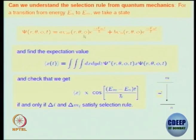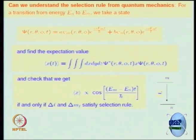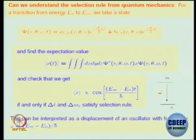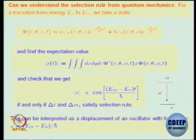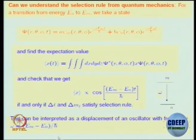Formally, even in a one-dimensional problem the expectation value is proportional to cos ωt. But for the three-dimensional hydrogen atom problem, the radial coordinate expectation value in a superposed state has a time dependence and will be non-zero only if ΔL and ΔM satisfy the selection rules. This evaluation can be interpreted as the displacement of an oscillator with frequency ω, where ℏω equals the difference in energy between the two levels.